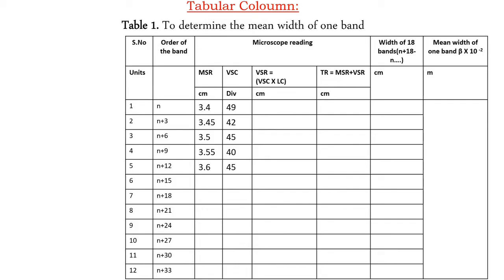For the N+12th fringe, MSR is 3.6 and VSC is 45 divisions. For the N+15th fringe, MSR is 3.65 and VSC is 44 divisions. For the N+18th fringe, MSR is 3.7 cm and VSC is 41 divisions. For the N+21st fringe, MSR is 3.75 and VSC is 40 divisions. For the N+24th fringe, MSR is 3.8 cm and VSC is 39 divisions. For the N+27th fringe, MSR is 3.85 cm and VSC is 35 divisions. For the N+30th fringe, MSR is 3.9 cm and VSC is 40 divisions. For the N+33rd fringe, MSR is 3.95 cm and VSC is 36 divisions.